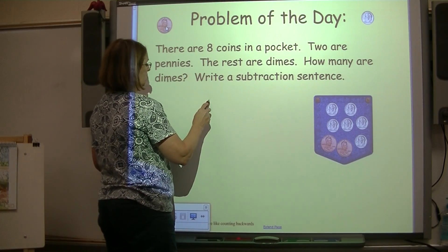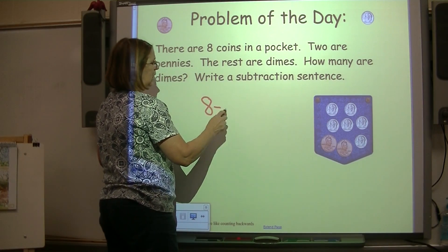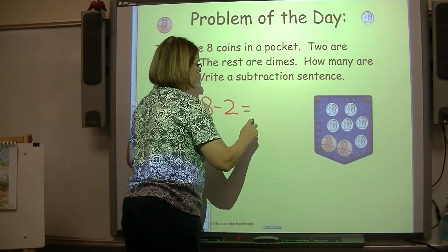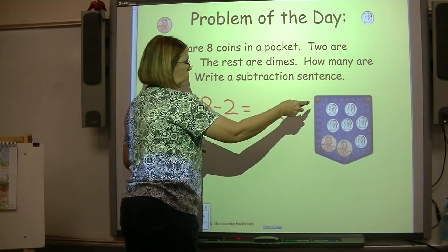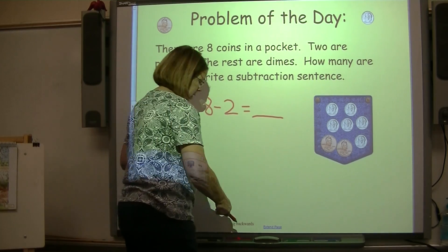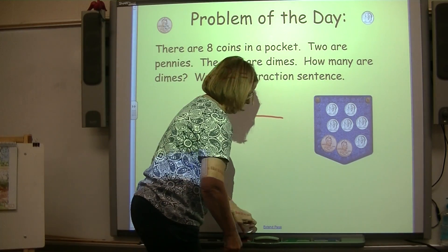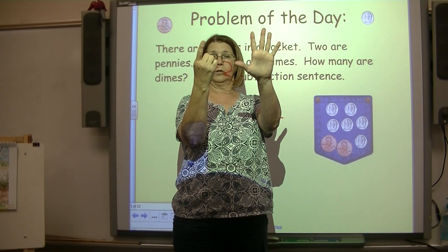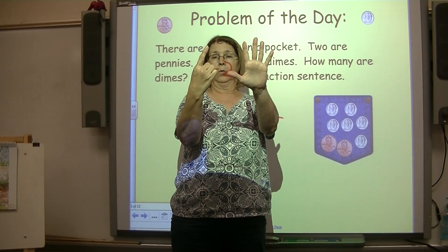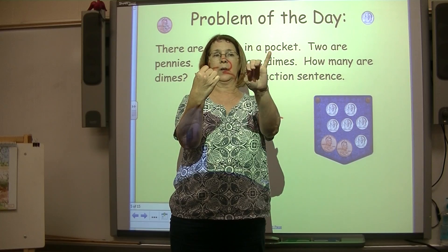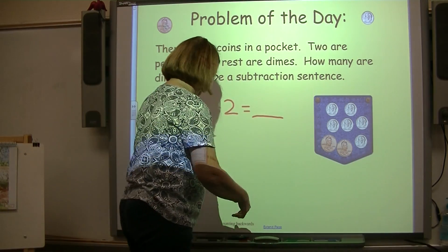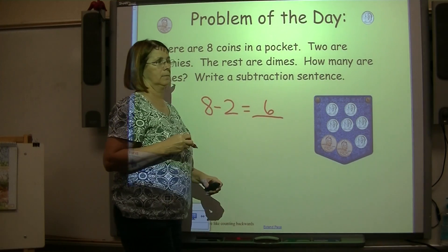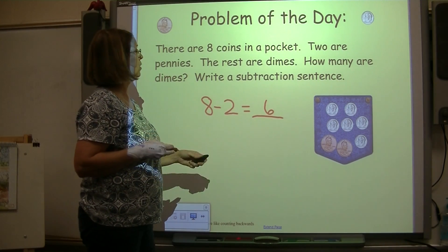We started with eight coins. Take away the two pennies. How many coins are dimes? Hold up eight, take down two — one, two. How many do we have left? One, two, three, four, five, six. Eight minus two equals six. Good work.